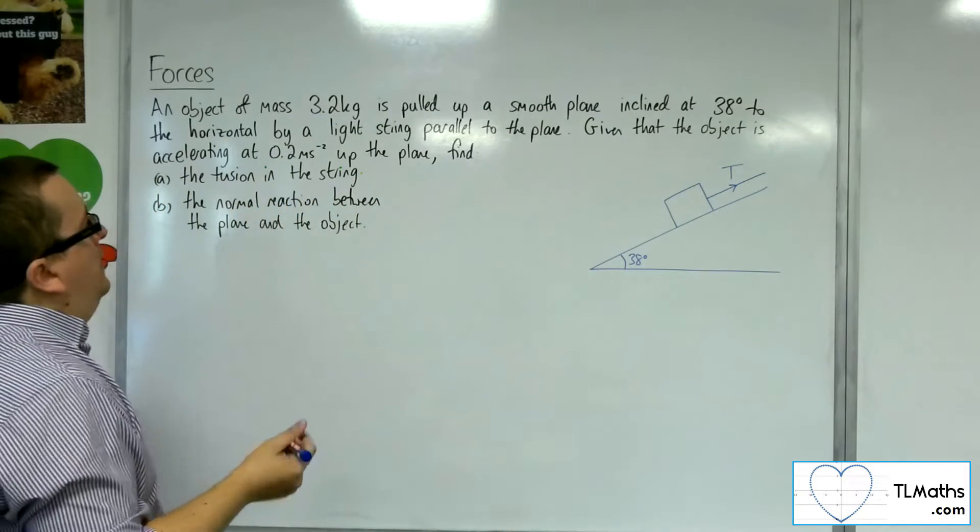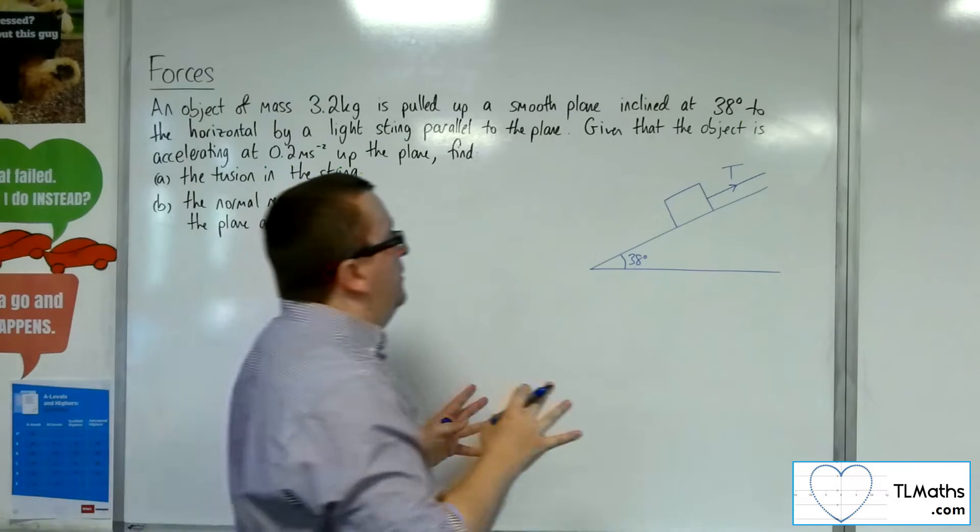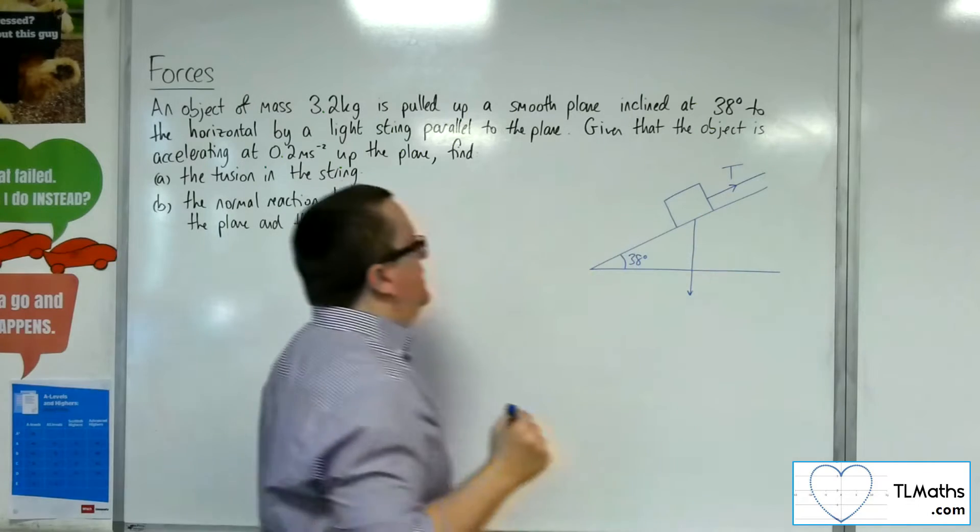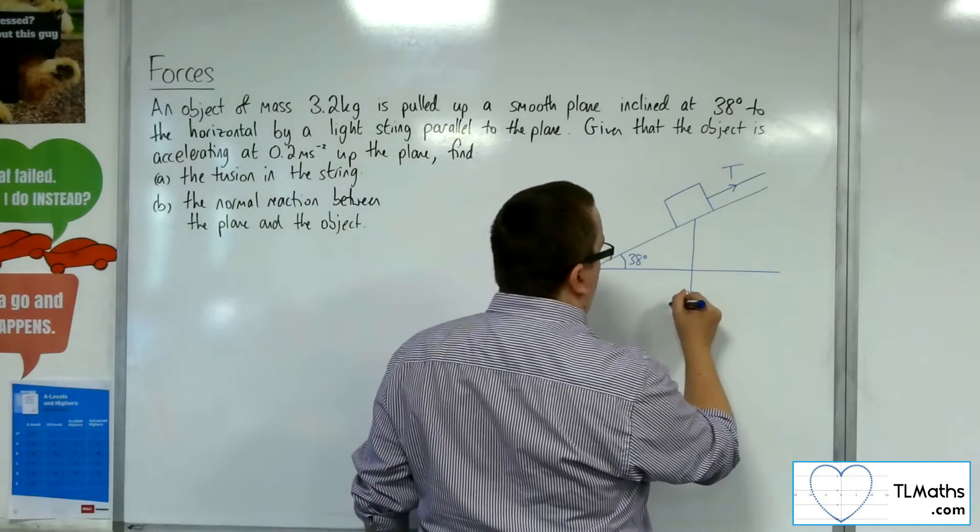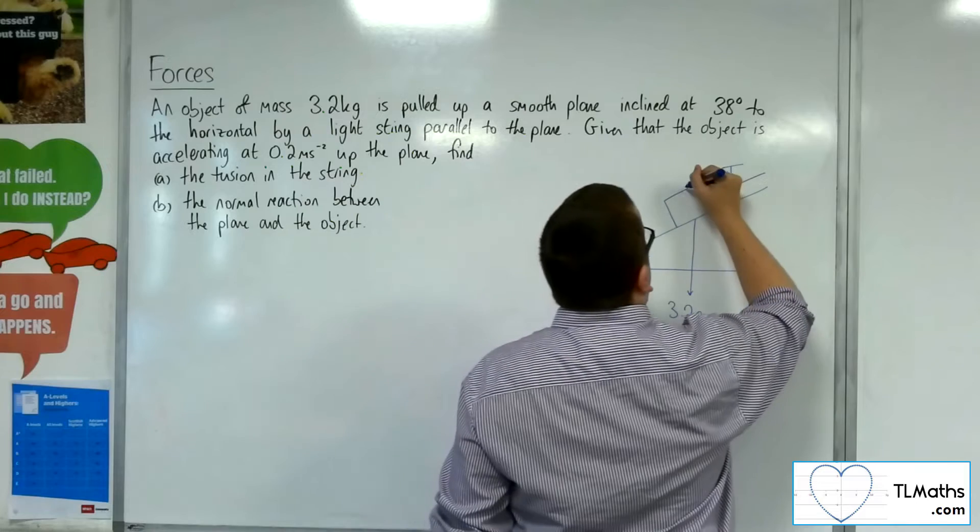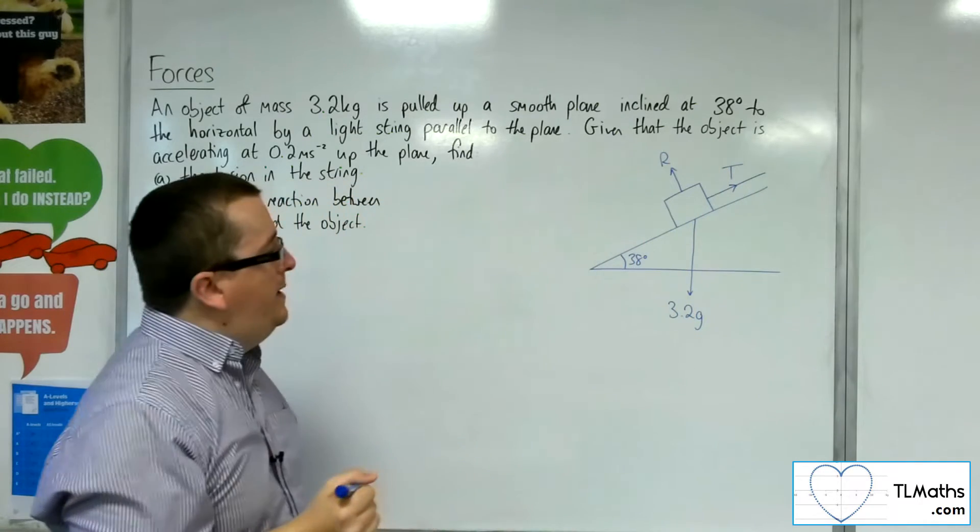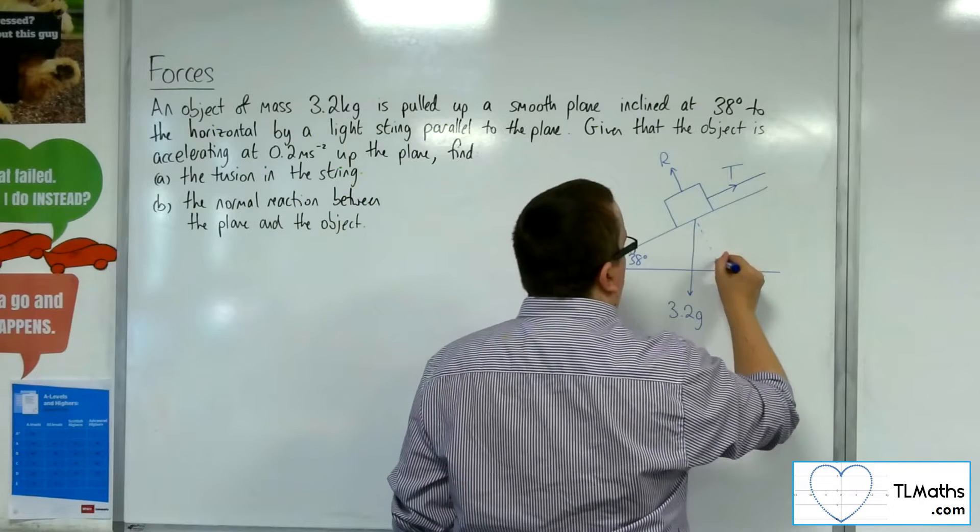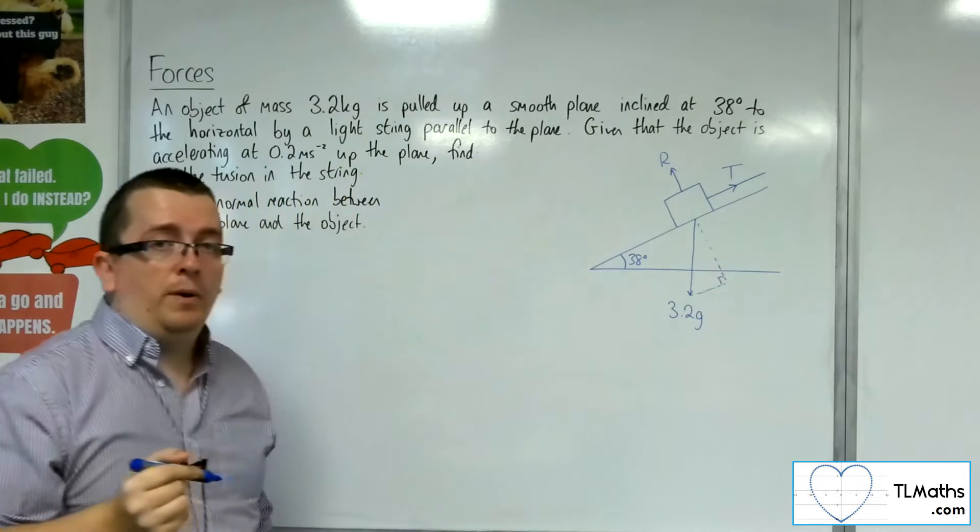There is no friction because the surface is smooth. We will have the weight of the particle working vertically downwards. It has a mass of 3.2 kilos, so its weight will be 3.2g. There will be a normal reaction force working perpendicular to the plane. And our first job will be to break this force up into its component parts.